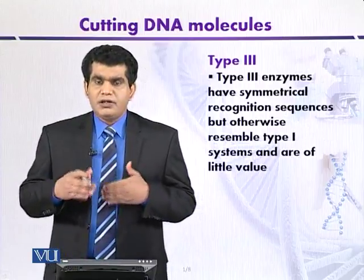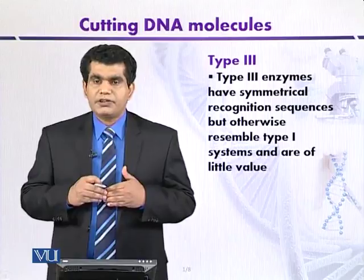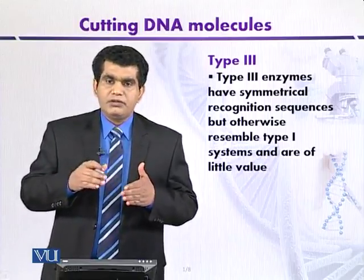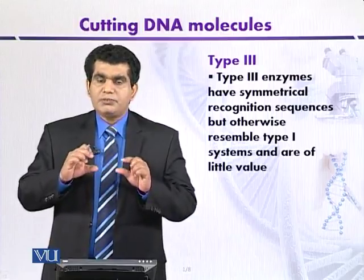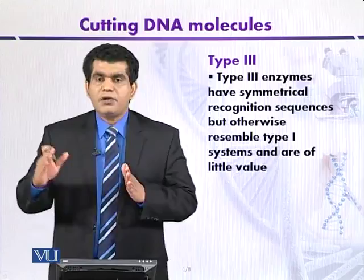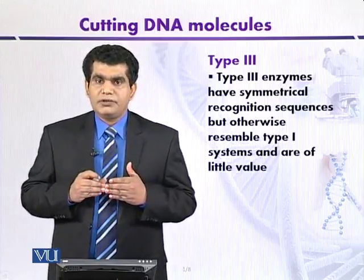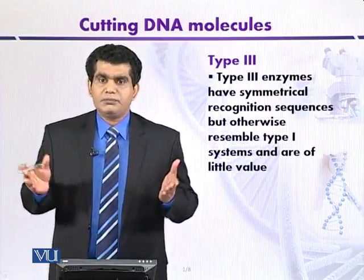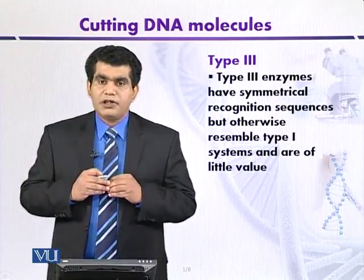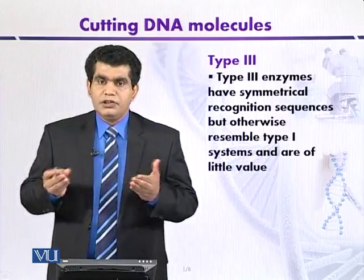Another type that is also not so valuable is type 3 restriction enzymes. They are more closely related to type 1. Although they can recognize a specific DNA sequence, like type 1, they cut away from the recognition site, so the DNA fragments generated are random. Desirable fragment length is sometimes not possible, so they are also not used in gene manipulation.